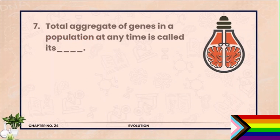Question 7. Total aggregate of all genes in a population at any time is called its gene pool. Ek population ke under total aggregate of all the genes present at all loci of all the members of species, that is known as gene pool.